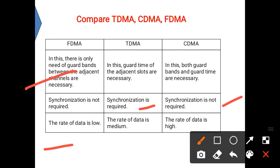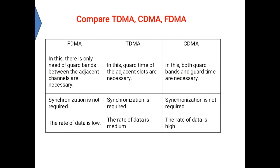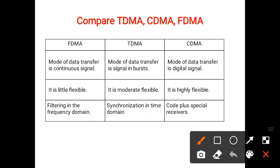The data rate in FDMA is low compared to TDMA and CDMA. The data rate in TDMA is medium, and in CDMA it is high. The mode of data transfer in FDMA is continuous. In TDMA, the mode is burst — different time slots are used for transmitting data of different users. In CDMA, the mode of data transfer is digital. Filtering in FDMA is in the frequency domain; in TDMA it is in the time domain; in CDMA it uses a special code.